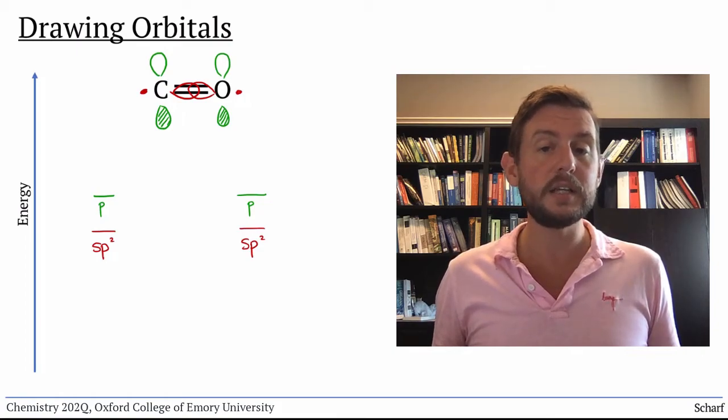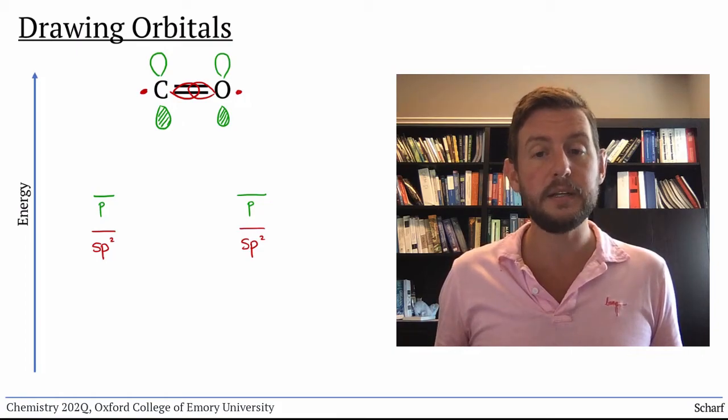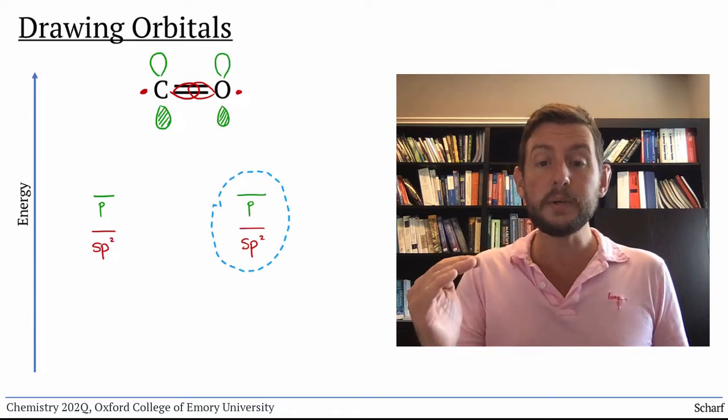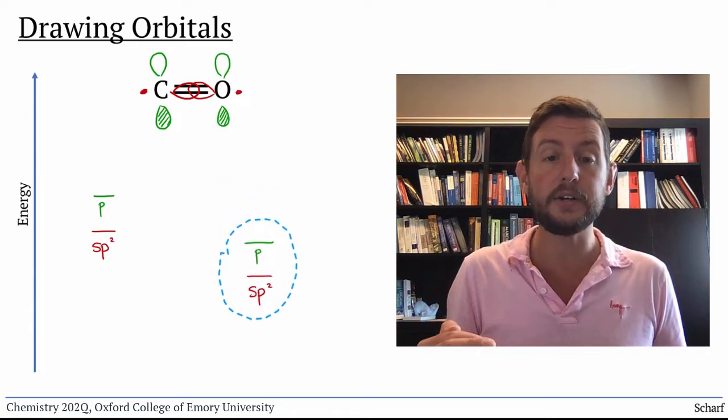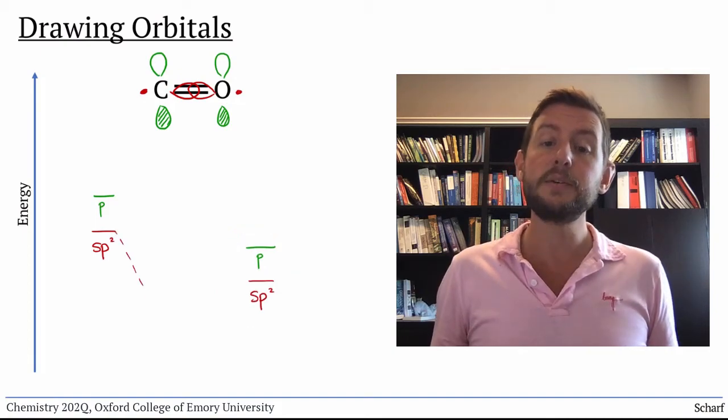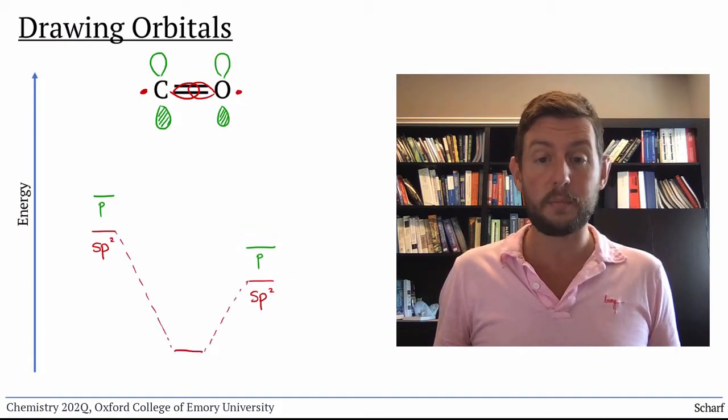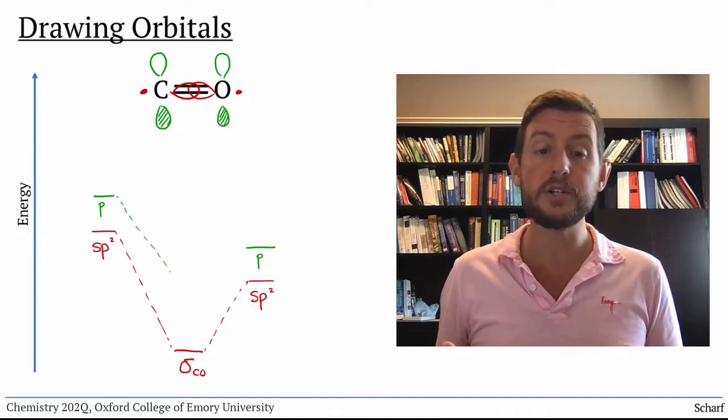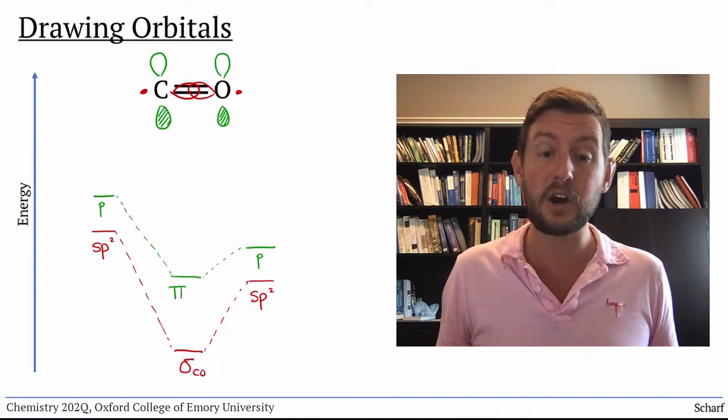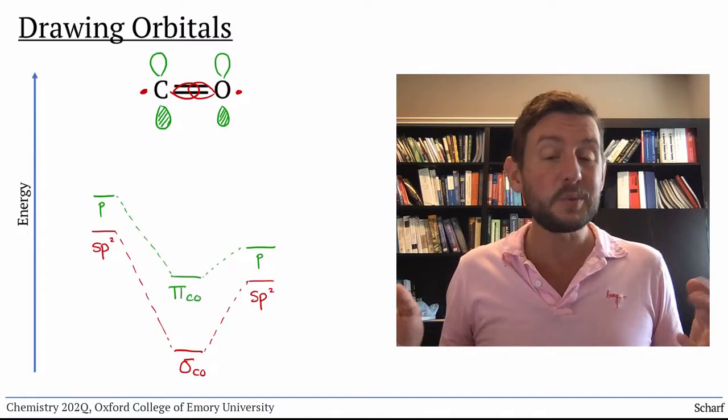But since oxygen is more electronegative than carbon, the oxygen orbitals are lower in energy than the carbon orbitals. And the resulting bonding orbitals are closer in energy to oxygen's orbitals than to carbon's.